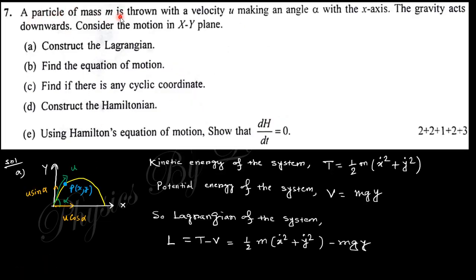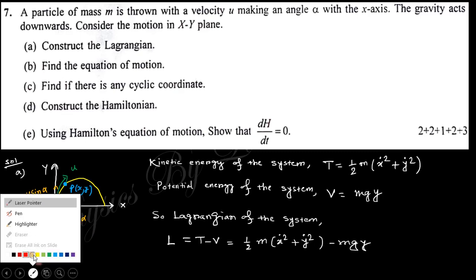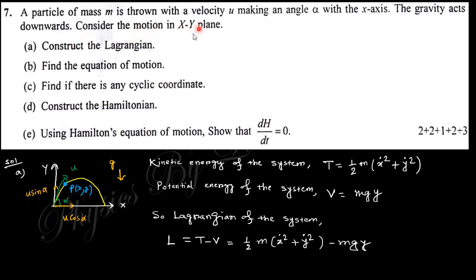The first question says: a particle of mass m is thrown with a velocity u making an angle alpha with the x-axis. The two components are u·cos(alpha) and u·sin(alpha). Gravity acts downward with acceleration g. Consider the motion in the x-y plane. The question asks us to construct the Lagrangian, find the equations of motion, identify any cyclic coordinate, construct the Hamiltonian, and finally prove that dH/dt = 0.